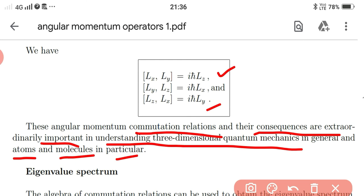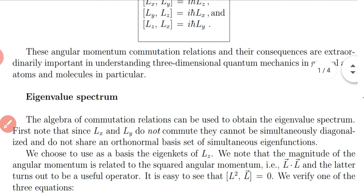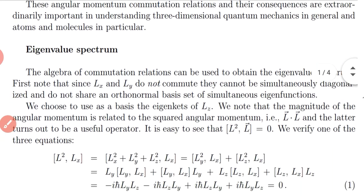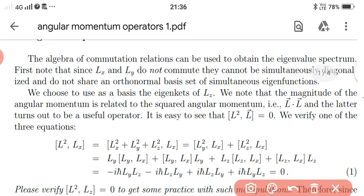Angular momentum commutation relations are very important in quantum mechanics, particularly in the study of atoms and molecules. The algebra of commutation relations can be used to obtain the eigenvalue spectrum.